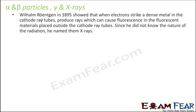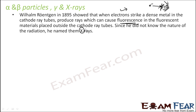William Röntgen in 1895 showed that when an electron strikes a dense metal in the cathode ray tube, it produces a ray. This ray causes fluorescence in a fluorescent material placed outside the cathode tube. He did not know the nature of this radiation, and since X is used for something unknown, he called them X-rays.